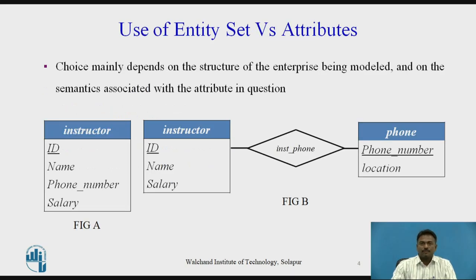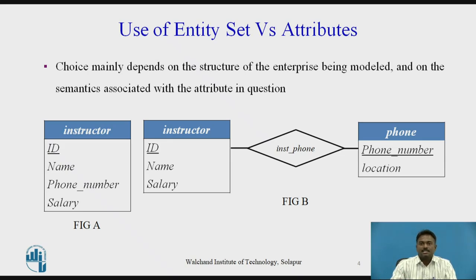First, we start with the use of Entity Set and Attributes. Generally, while designing an ER database schema, a database engineer faces a situation where a designer cannot decide whether a particular thing must be considered as an entity or as an attribute. In such situations, two questions will arise: what makes that particular thing an attribute, and what makes that particular thing an entity? Such confusion will lead to a Design Issue. The selection mainly depends on the structure of the real world enterprise being modeled and the meaning of the word associated with the attribute in question.